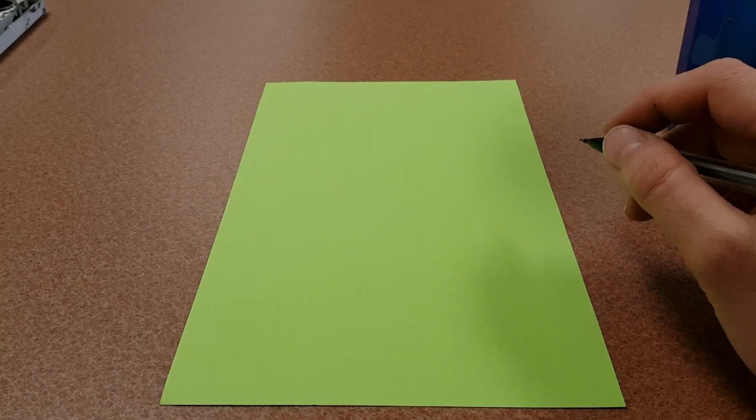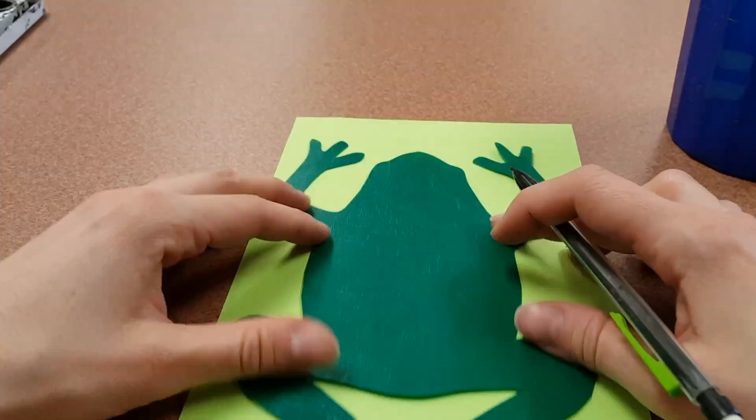Today we're going to make some poison dart frogs which are very brightly colored and they have lots of black decoration on their back.